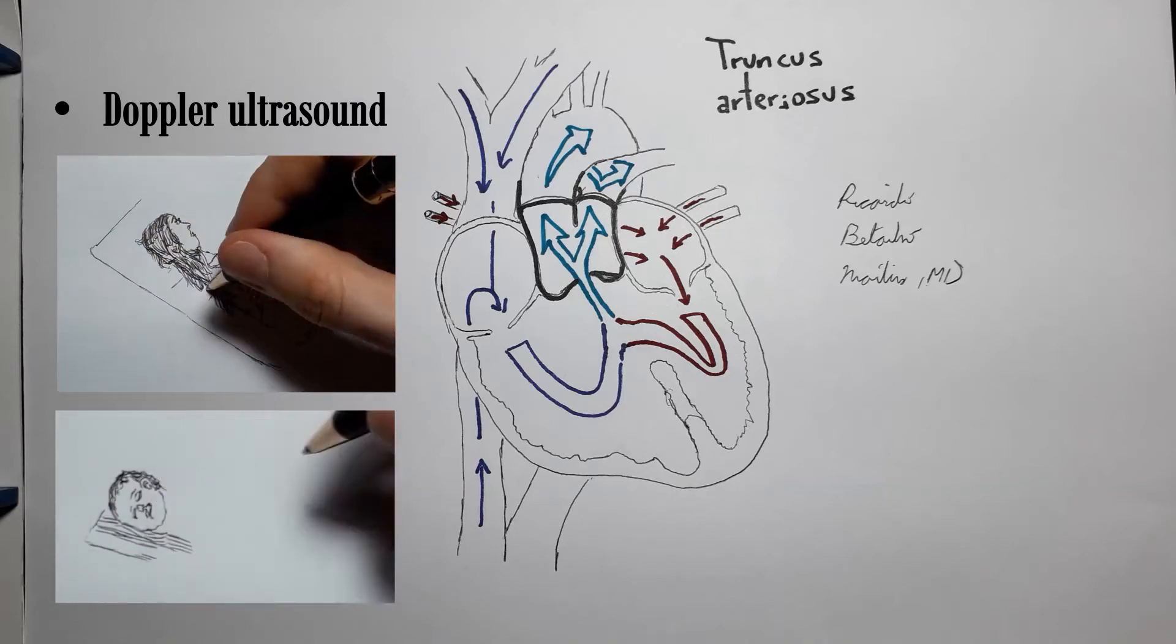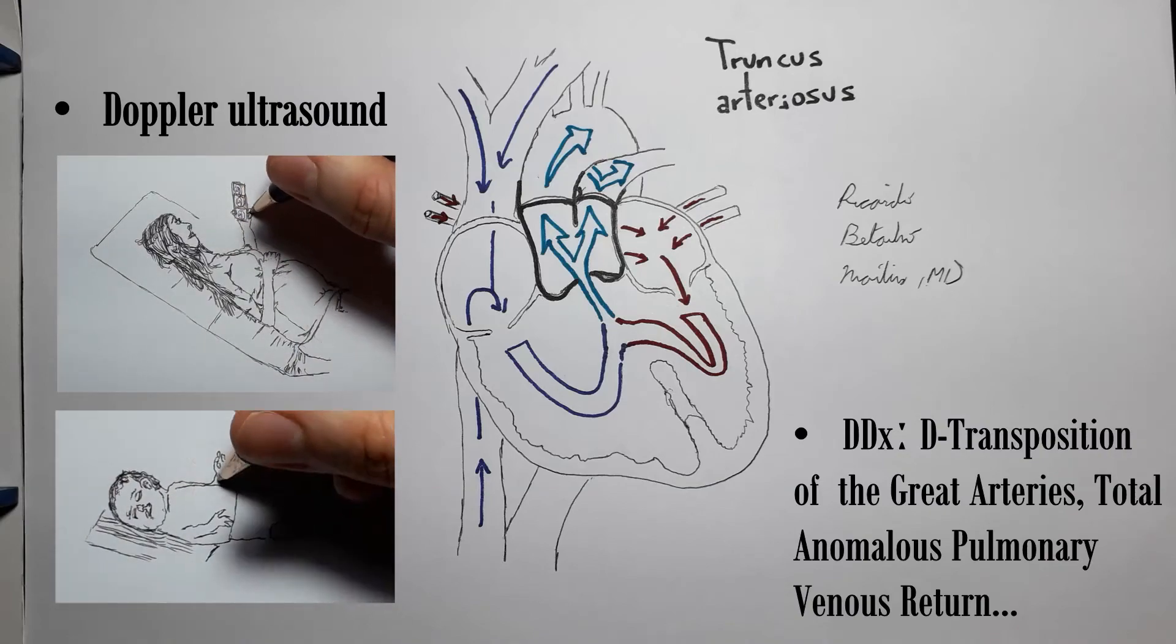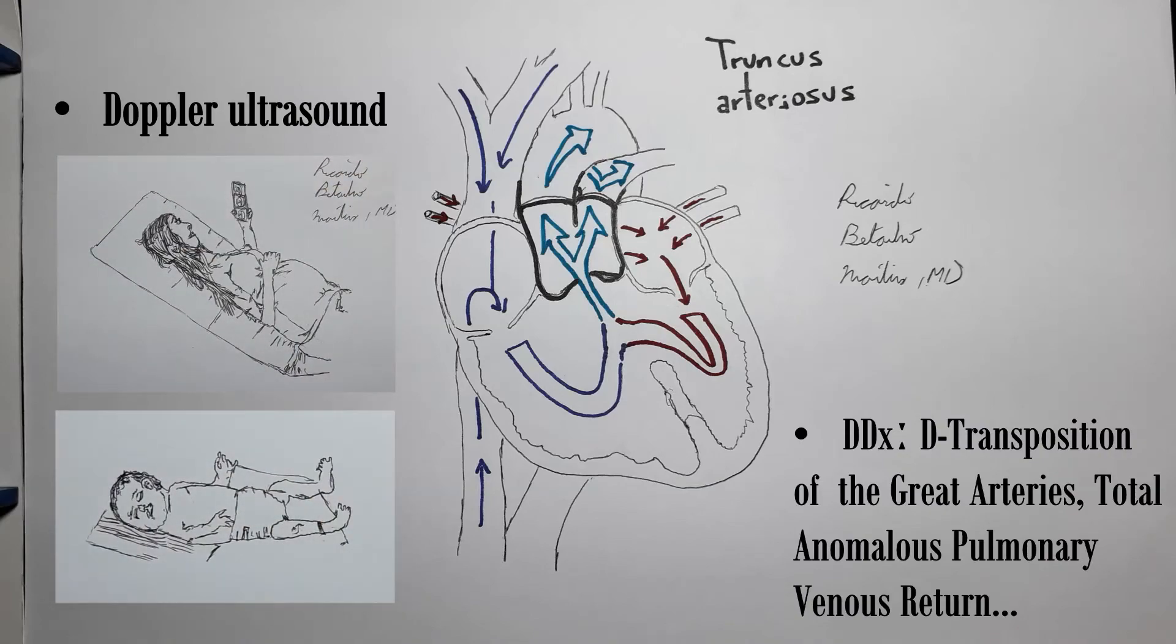Finally, its differential diagnosis includes mostly other cyanotic congenital heart diseases, such as D-transposition of the great arteries and total anomalous pulmonary venous return. If you want to contrast it with these other diseases, make sure you click the links on the screen.